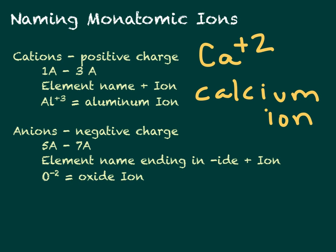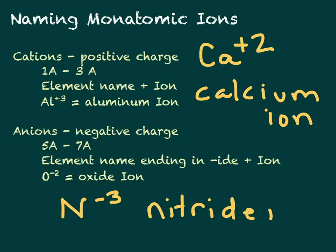Anions have a negative charge and are found in Groups 5A through 7A. Here we change the name: take the element name, change the ending to -ide, and add the word ion. For example, oxygen with a negative two charge is called the oxide ion, and N³⁻ is called the nitride ion. To summarize: cations keep the element name, anions change the ending to -ide.